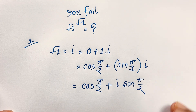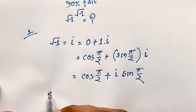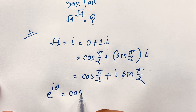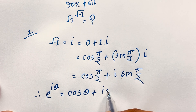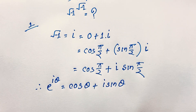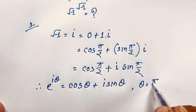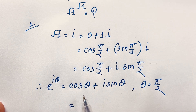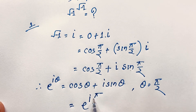According to Euler's formula, e^(iθ) = cos θ + i·sin θ. Applying this formula here with θ = π/2, the expression cos(π/2) + i·sin(π/2) equals e^(i·π/2). So √(-1) = i = e^(i·π/2).